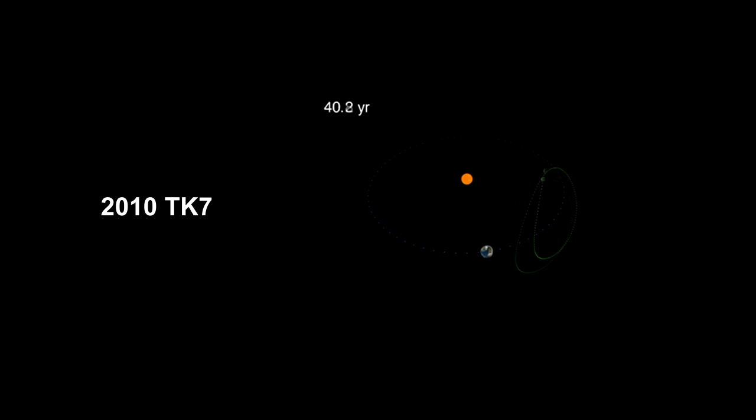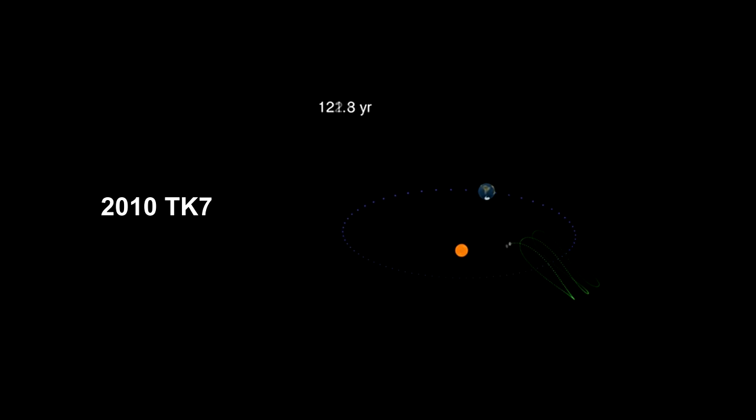In 2010, we discovered a Trojan asteroid orbiting Earth's L4 point, 60 degrees ahead of the Earth called 2010 TK7.